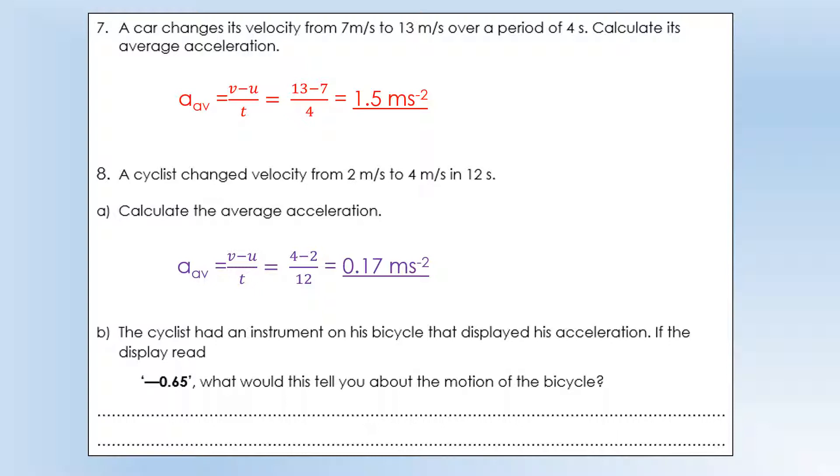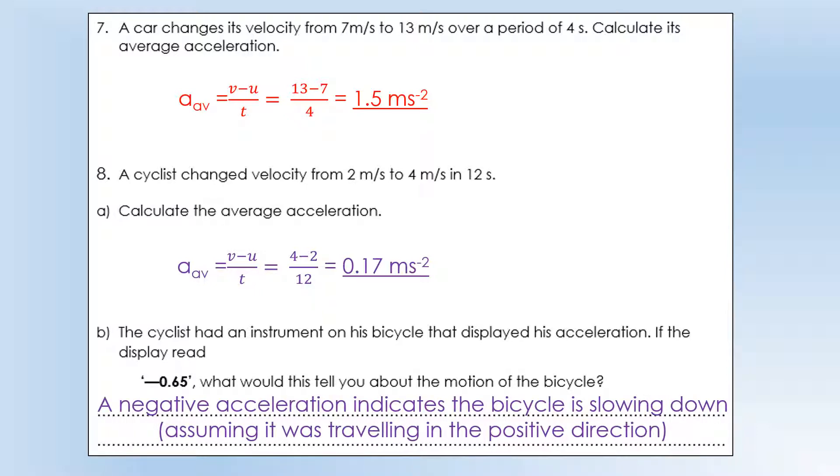The cyclist had an instrument on the bicycle that displayed his acceleration. If the display read minus 0.65, what would that tell you about the motion of the bicycle? Negative acceleration indicates the bike is slowing down, but I'm just going to flag this up. We are assuming the bike is traveling in the positive direction, so that a negative acceleration means there's a braking force, or a force trying to slow it down.